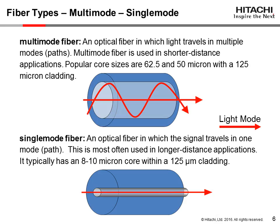Multimode fiber is an optical fiber in which light travels in multiple modes or paths, thus its name. Multimode is used in shorter distance applications with a maximum of about 550 meters. Popular core sizes are 62.5 and 50 micron with a 125 micron cladding. The 62.5 micron core is more for legacy systems, while the 50 micron is the standard today.